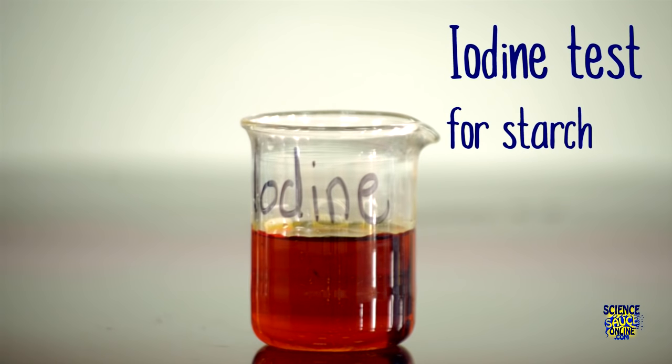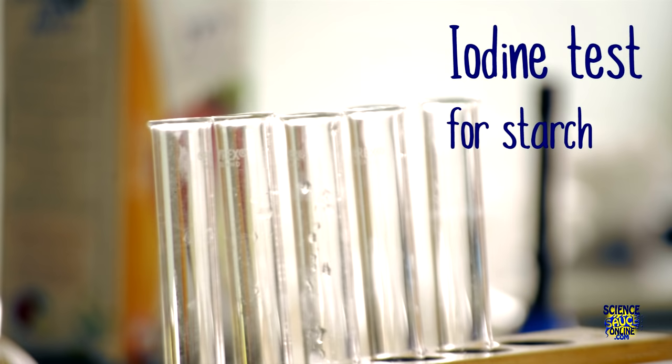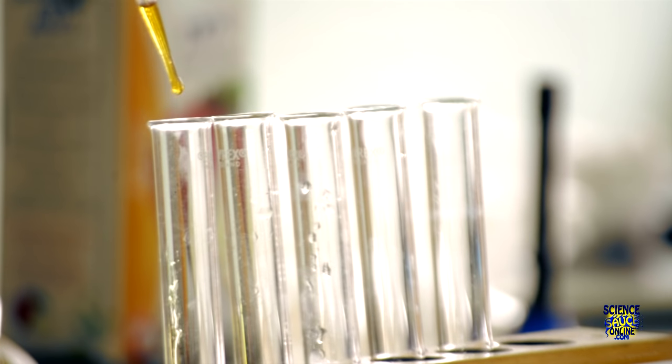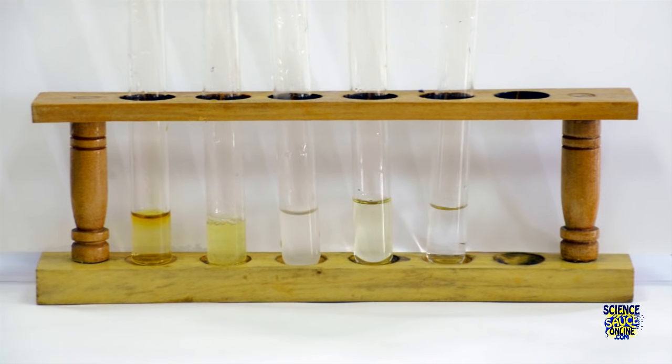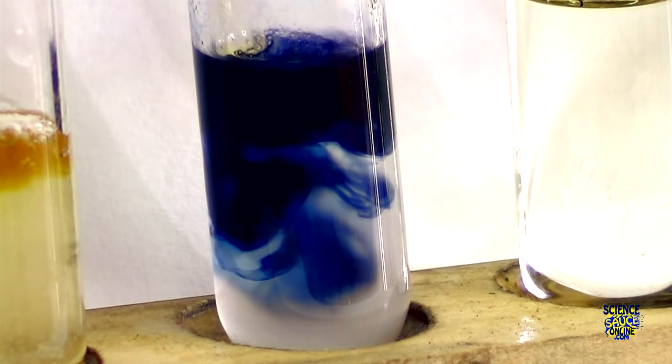Let's start with the iodine test which is the test for starch. First take your iodine solution and add it dropwise to each of your samples. Notice that the iodine is a kind of orangey color and when we add it into our samples that orangey color remains until we add it to the starch solution and there's a clear blue-black change in color.